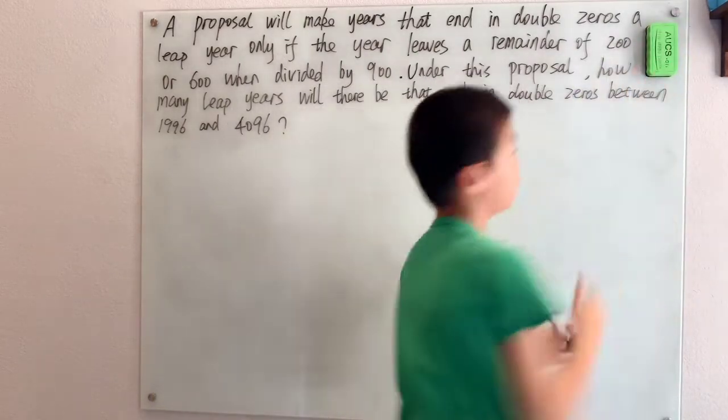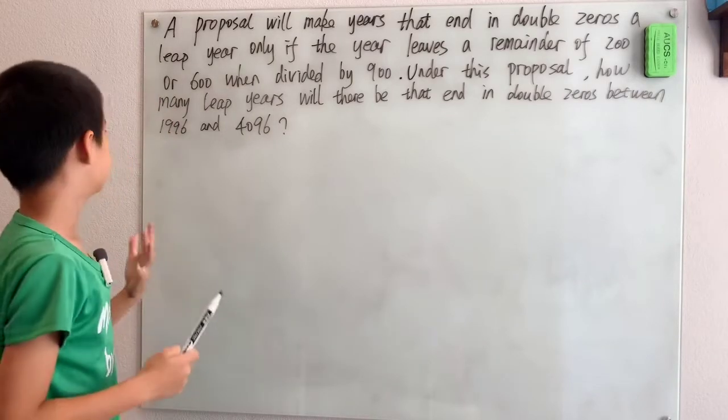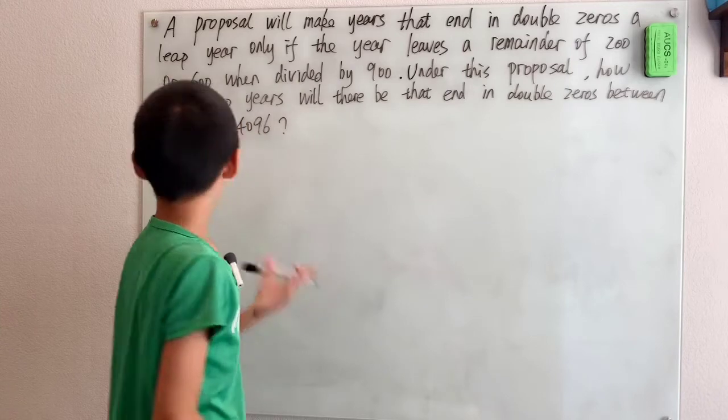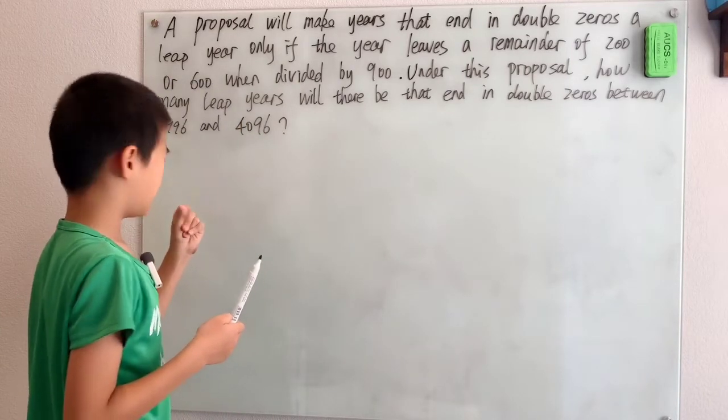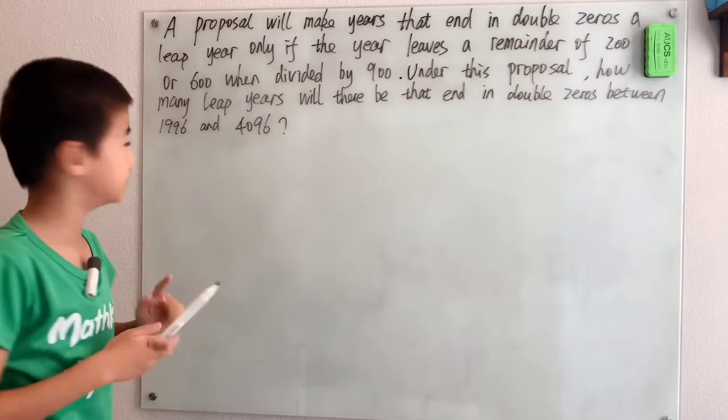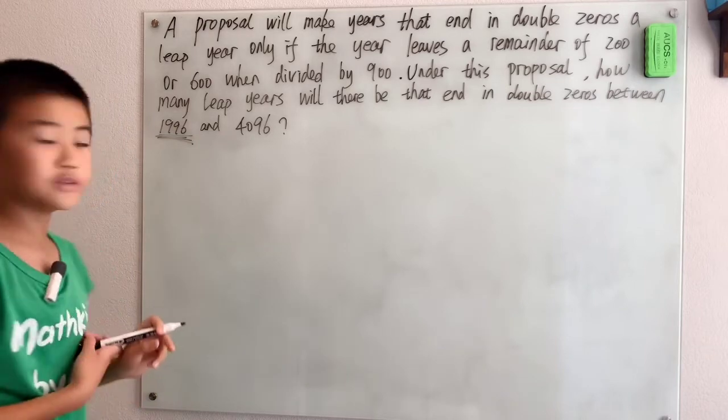Now that we know how to do this problem, we can start going through the multiples of 900. First we already went through 900 as our multiple, but that didn't work because the least number we can have is 1996.